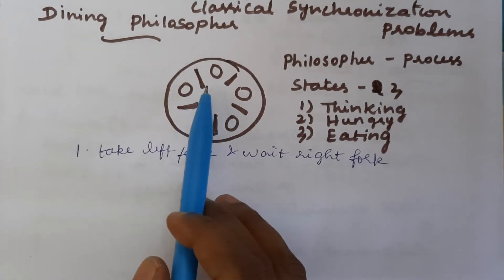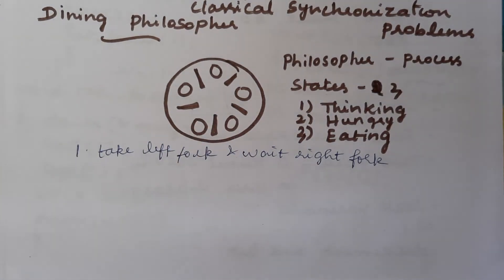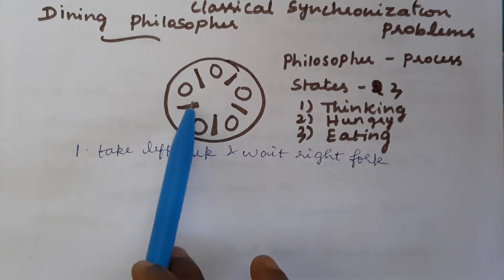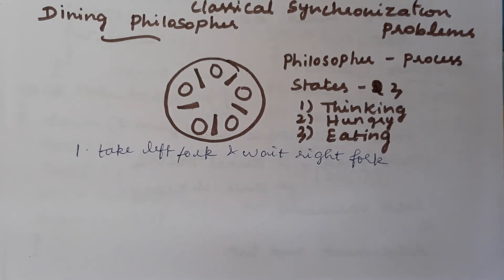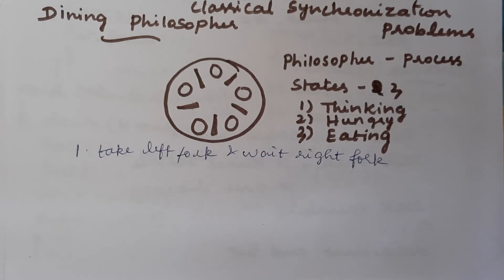If the right fork has been taken by some other philosopher, he will wait. If all philosophers at the same time take their left fork and wait for the right fork, this leads to deadlock. Even after a very long time, none of the philosophers can get the right fork at all. This situation cannot be recovered — that is deadlock. This is not the proper solution.